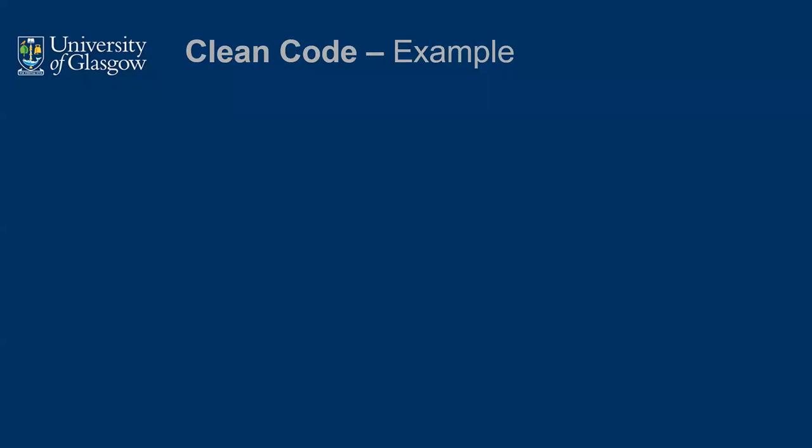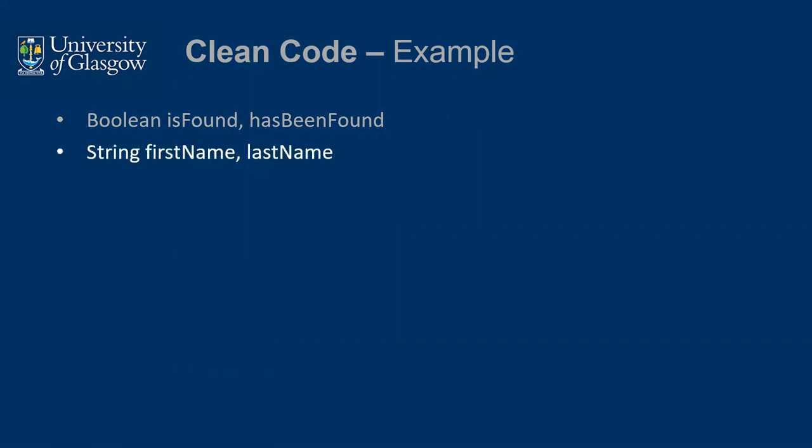For clean code examples: if you have a Boolean, rather than just calling it 'a', calling it 'isFound' or 'hasBeenFound' makes it easier to understand when you reread the code. You understand what the variable is doing — it checks if something is found. And when you do an if statement, 'if isFound then' makes English sense. Or 'while isFound' or 'while not found' — you're reading it almost as English. Similarly for strings, 'firstName' and 'lastName' are much better than abbreviations like 'FN' or 'LN'. The acronym can mean any number of things.